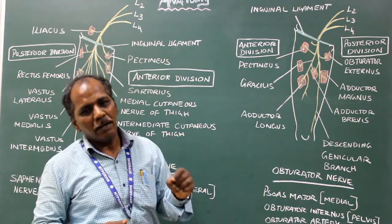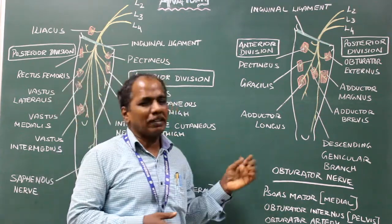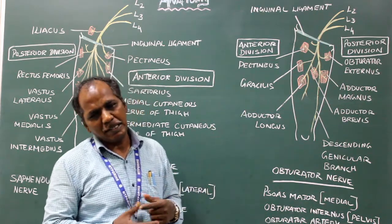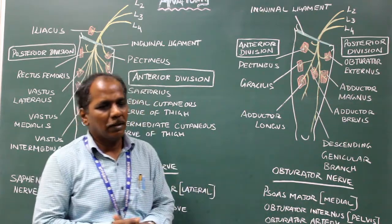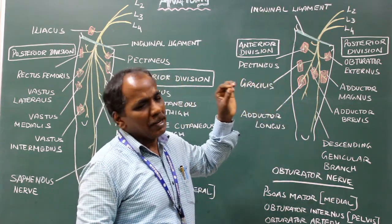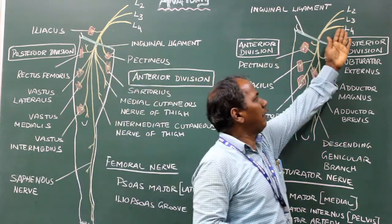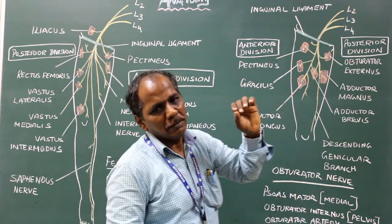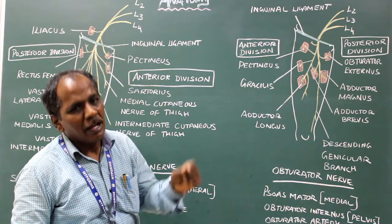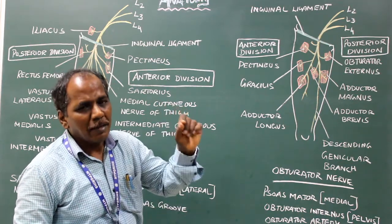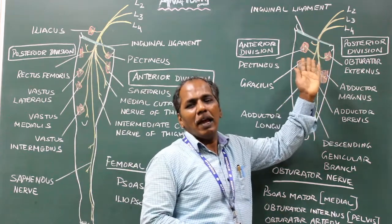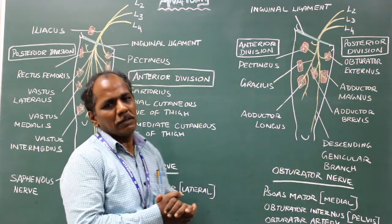The obturator nerve is the chief nerve of the medial compartment of the thigh. It arises from the lumbar plexus. Its root value is formed by the ventral division of the anterior primary rami of L2, L3, and L4 spinal nerves.